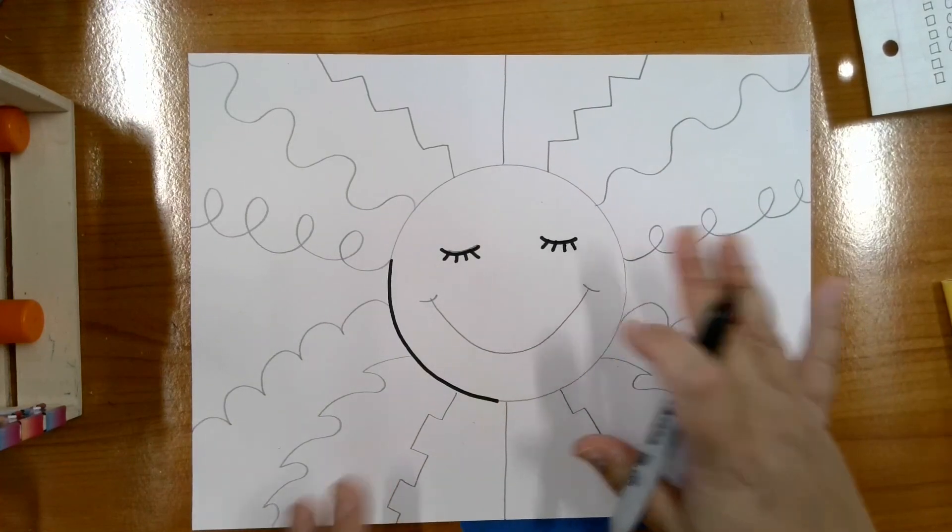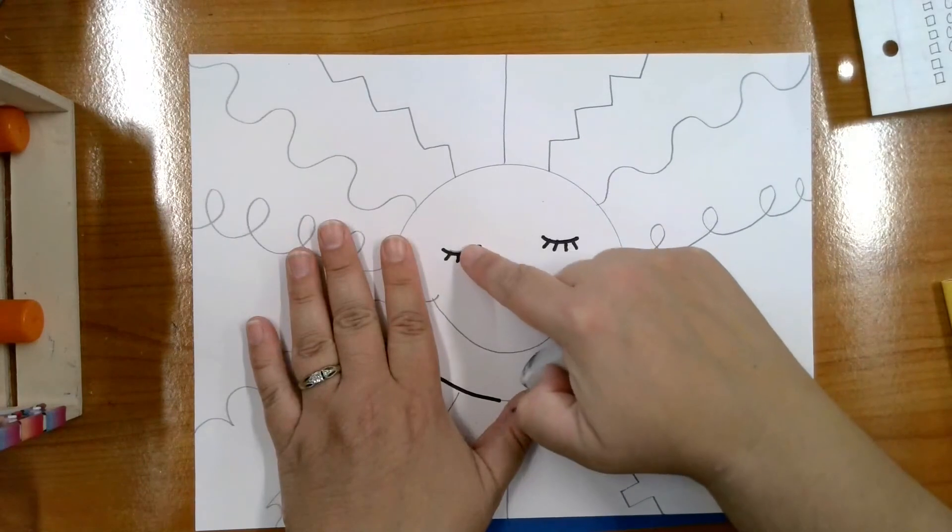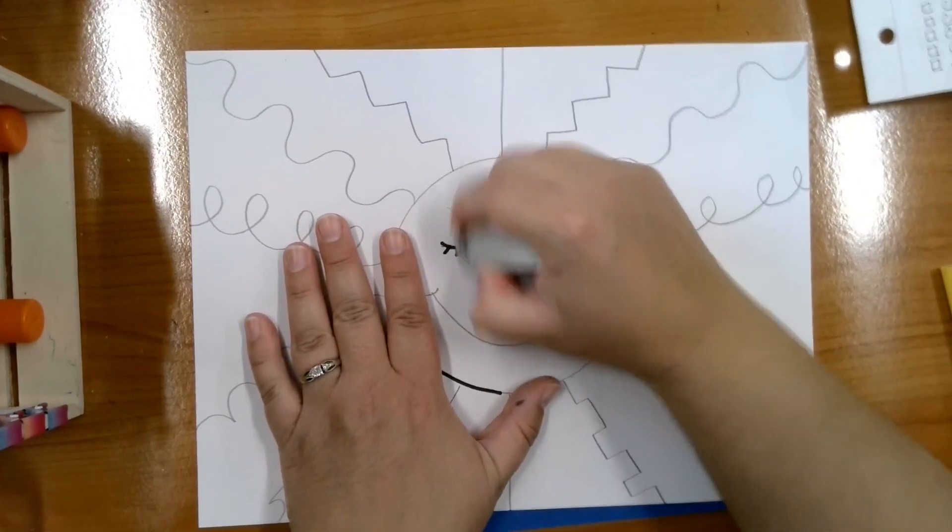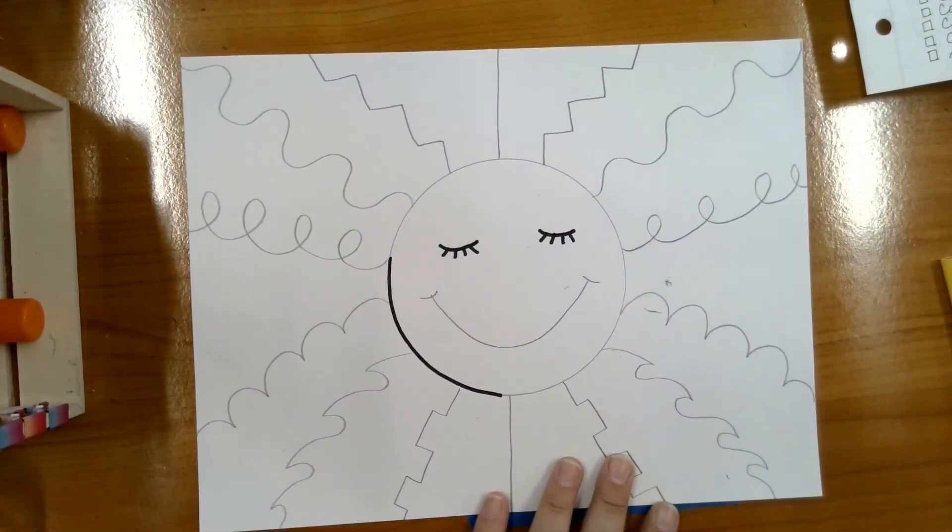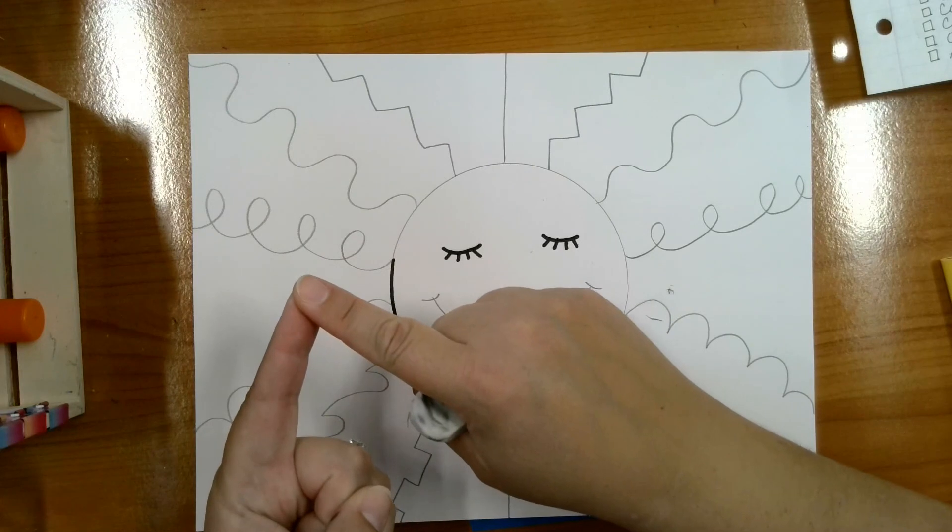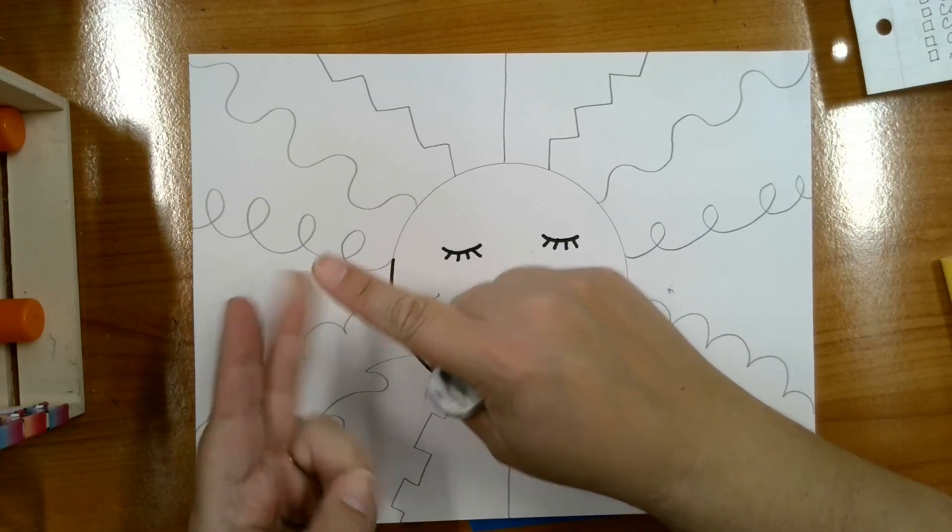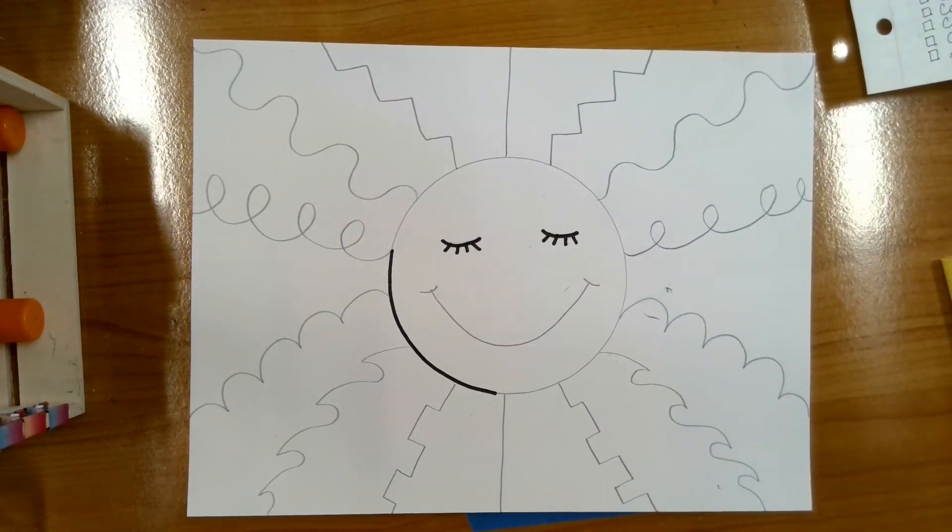I'm going to let you go ahead, trace it, and then go back. And if there's any sneaky pencil marks that are peeking out, you can erase those, okay? Next time, we're going to talk about how we're going to add color to this. So first, draw today, trace, and erase, and then save this in your folder for next week. Have a great day, you guys.